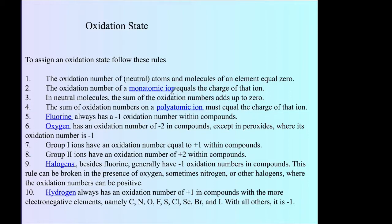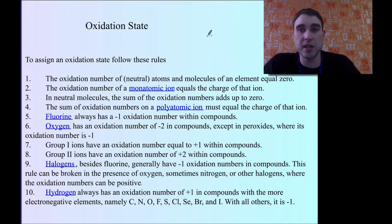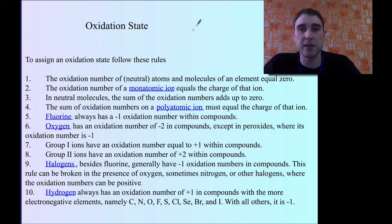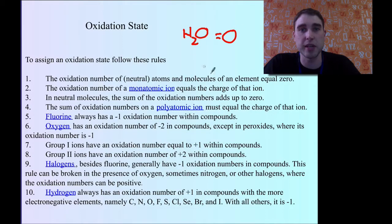The oxidation number of a monatomic ion equals the charge of that ion. So if you had Fe³⁺, the oxidation number would be plus 3. In neutral molecules, the oxidation numbers add up to zero. So for H₂O, the oxidation numbers have to add up to zero because there's no charge.